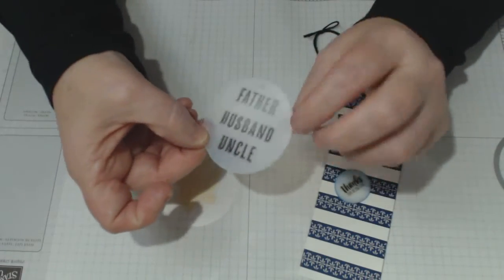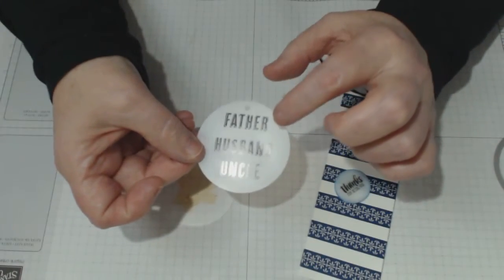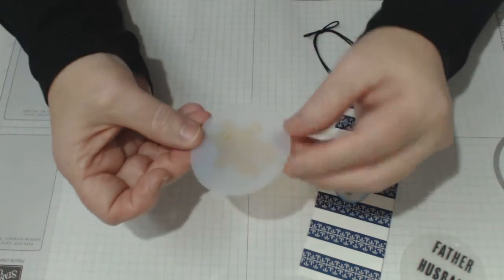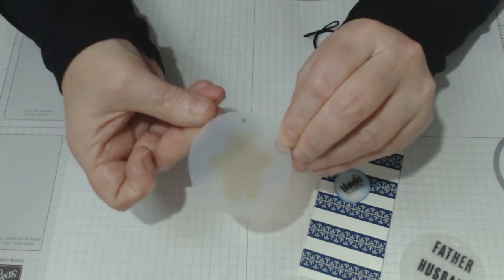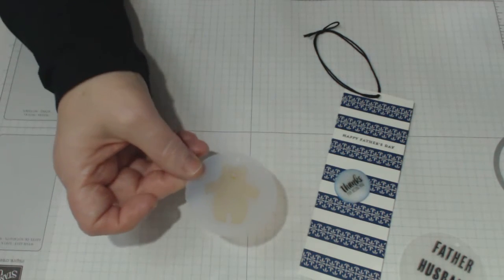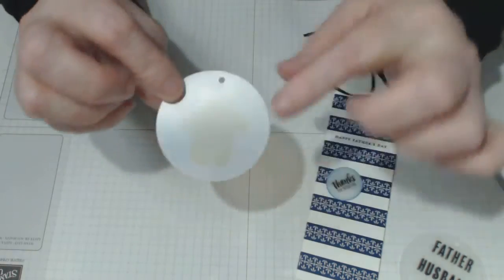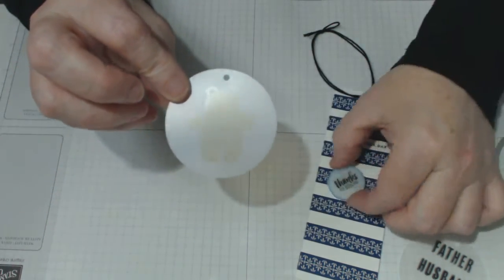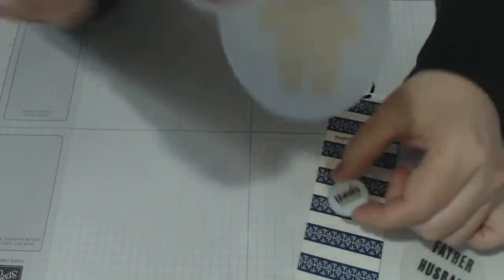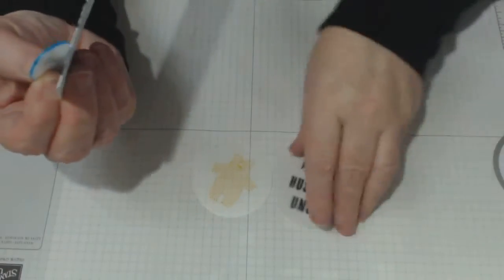I've already stamped them and you just use a StazOn stamp ink to make sure that it stays. On this one I put father, husband, uncle which is what my husband is and for a little bear. Now it's pretty hard to see the bear but he is there and when you shrink it it will become so intense it will be nice brown color and that's with StazOn as well. So when we shrink them, they shrink down to a third of their size and this is the opaque shrink plastic. So I'll show you how I've done that and then I'll show you how I've done the rest of the bookmark.